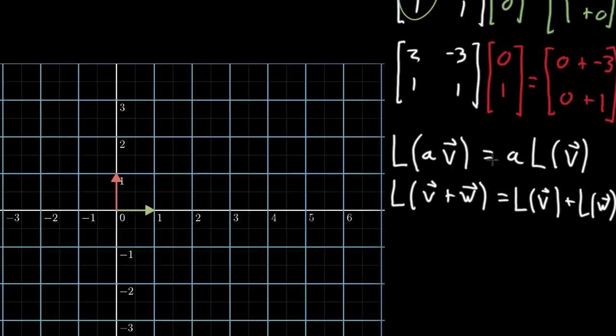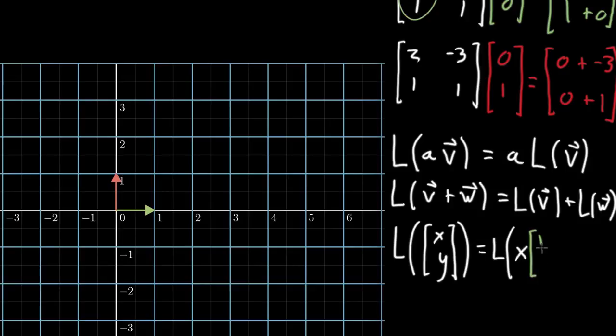And one of the most important consequences of this formal definition of linearity is that it means if you take your function and apply it to some vector, x, y, well, it can split up that vector as x times the first basis vector, x times 1, 0,